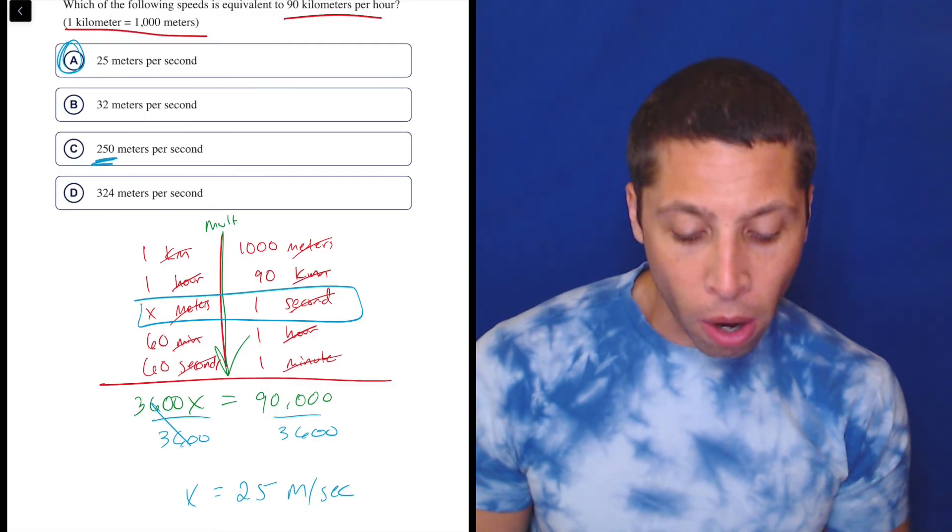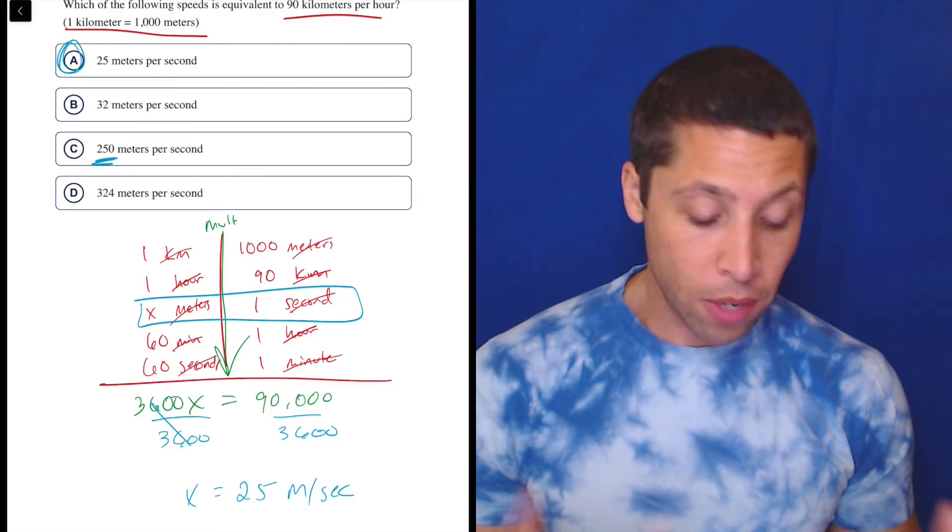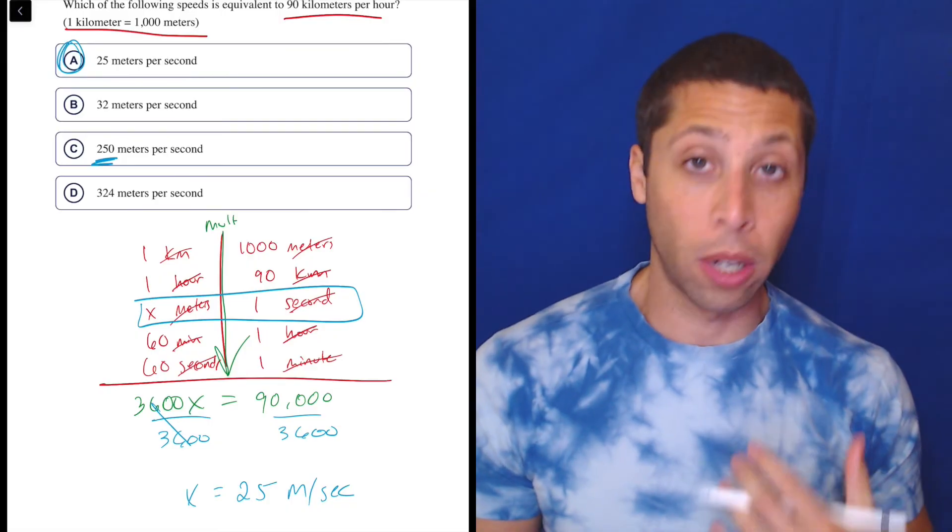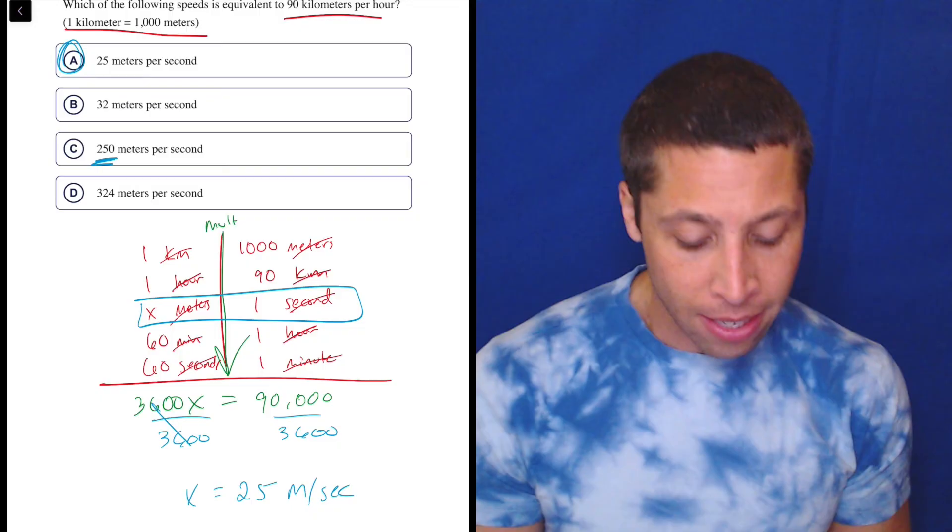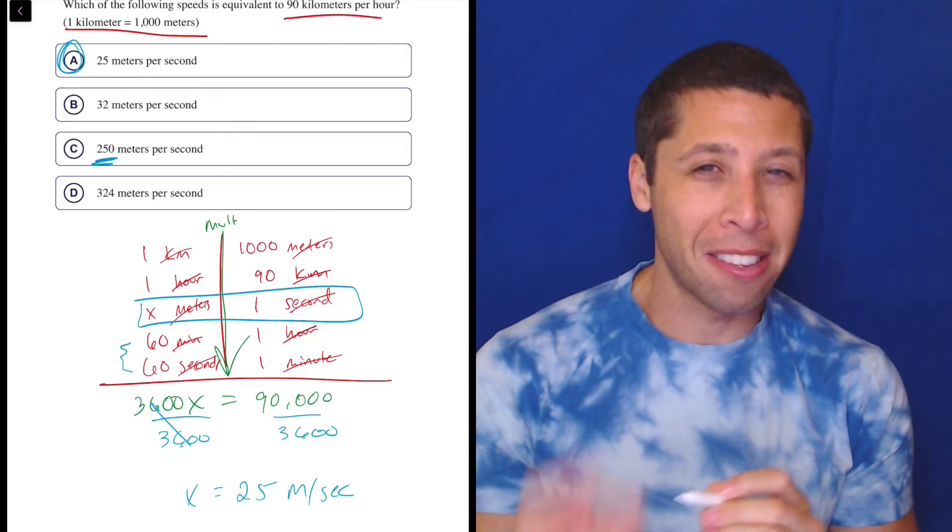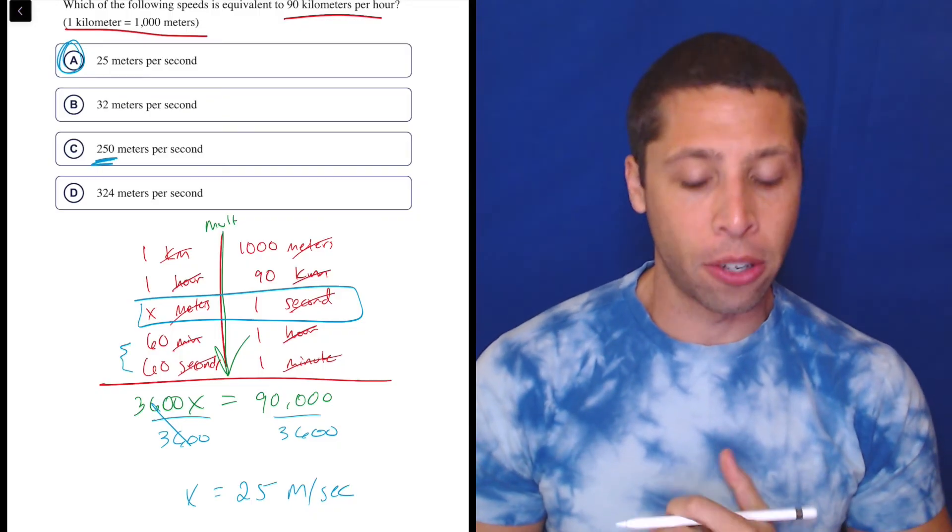And we can see where we might've gone wrong. If we lost a zero, we might've gotten the 250. I don't know where the 32 and the 324 come from. Those are probably answers we get from leaving out one of the units. My guess is it has something to do with these two 60s that if we left one of those out, we would get that other answer.